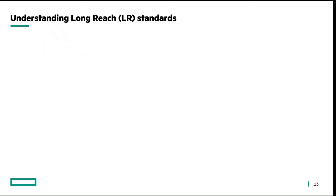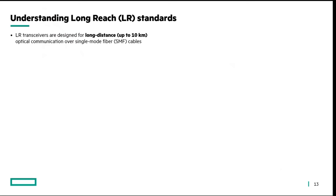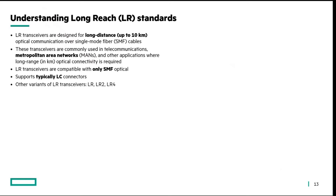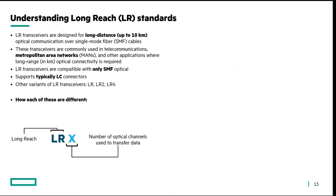Now let's discuss LR, which stands for long-range standards. LR transceivers are designed for long distances up to 10 kilometers. Because they support long-range up to a few kilometers, they can be used in metropolitan area networks and other long-range communications requiring a few kilometers of connectivity. LR transceivers are compatible only with SMF optical fibers and typically support LC connectors. Other variants are LR-2 and LR-4, and similar to SR variants, the integer indicates the number of optical channels being used.